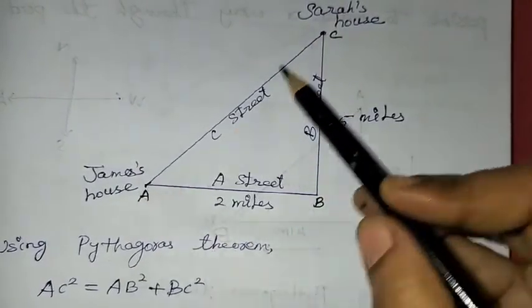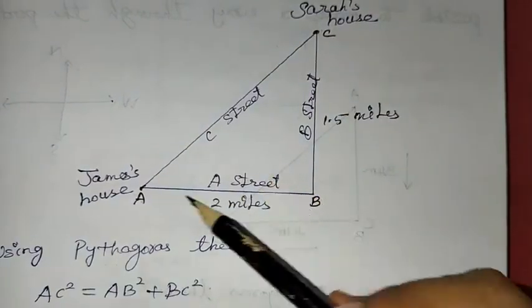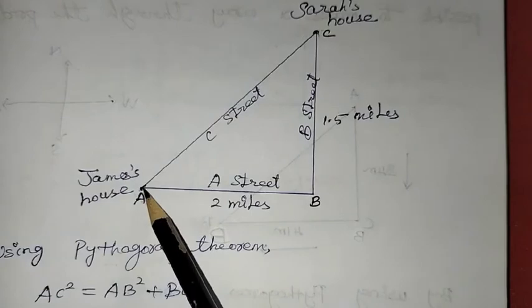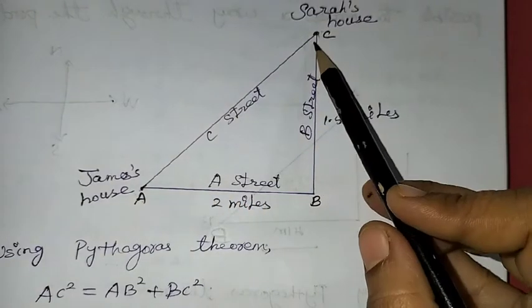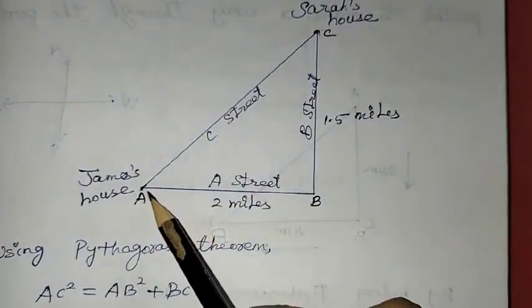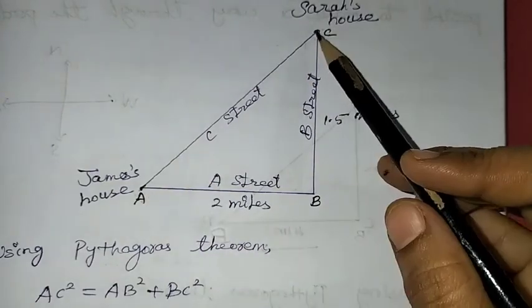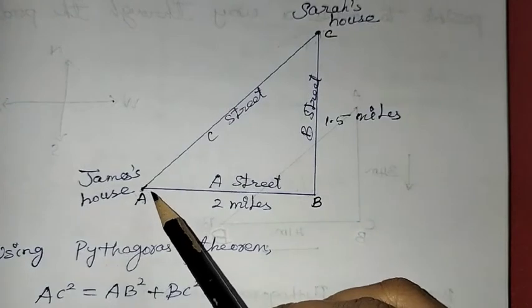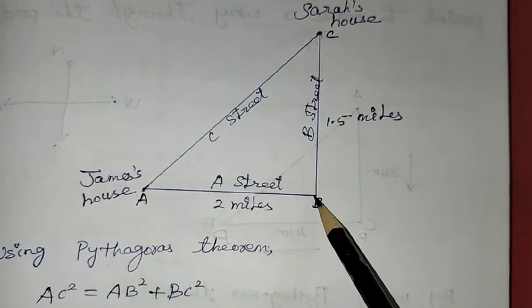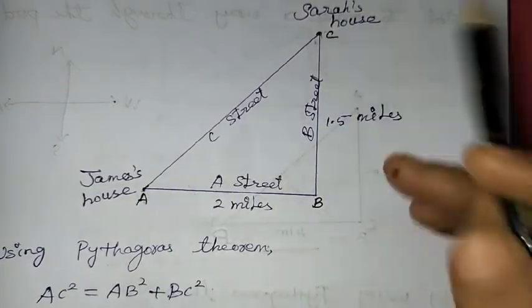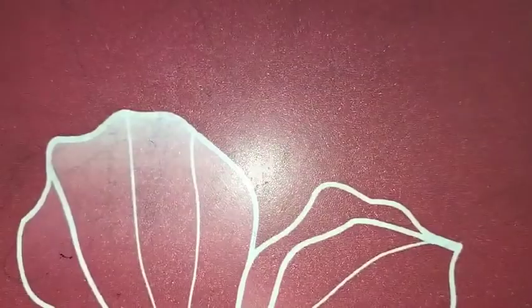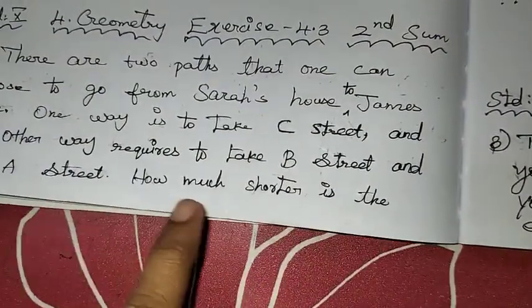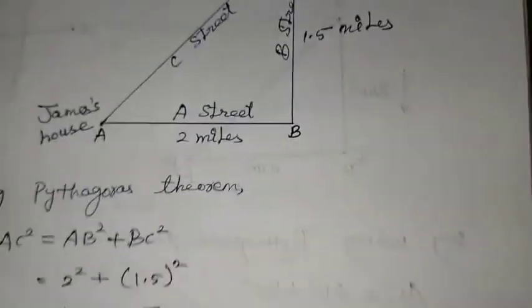From James' house, we can go two ways. One way is through C Street. This is A Street, this is B Street, which is the shorter way. So the question is, which way is the short way? We will determine how many miles is the direct path along C Street.